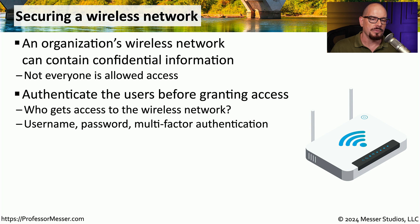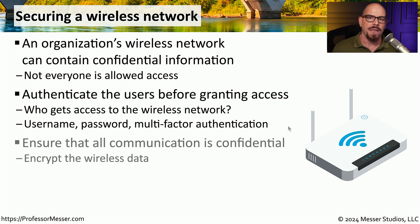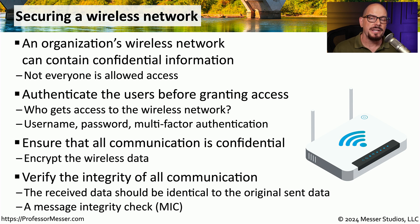One way that we provide security on this wireless network is to limit what users are able to access the network. We would commonly do this with some type of authentication method, such as a username, a password, or some type of multi-factor authentication. We want to be sure that everything sent over this wireless network is protected, so we need to add confidentiality in the form of encryption. And to be sure that we've received the correct information, we include a message integrity check so that we can verify the information received is exactly the information that was originally sent.